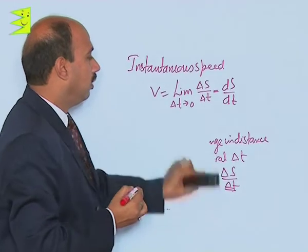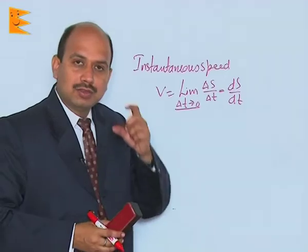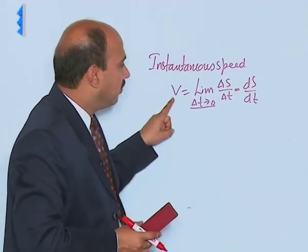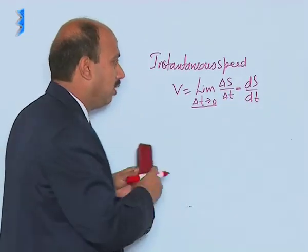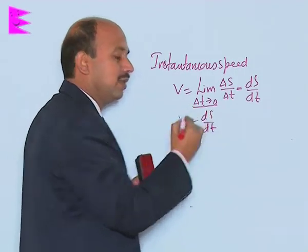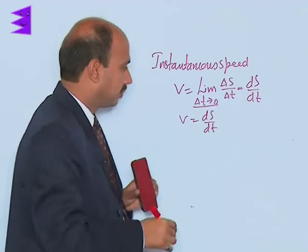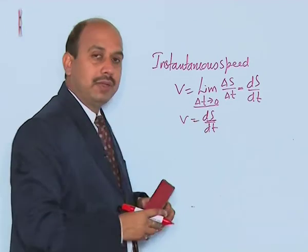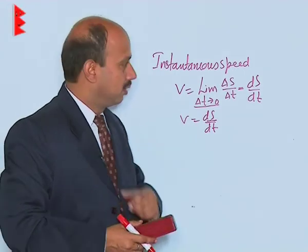Here, delta T tends to 0 means the time interval is very small, that means at any particular instant. So V equals ds upon dt is known as instantaneous speed. This ds upon dt can be called the derivative of distance with respect to time, so the derivative of distance with time is known as instantaneous speed.